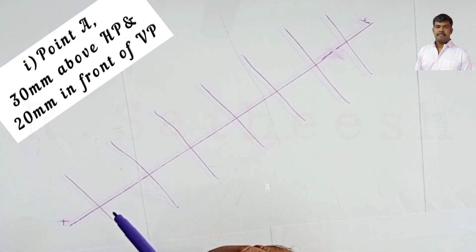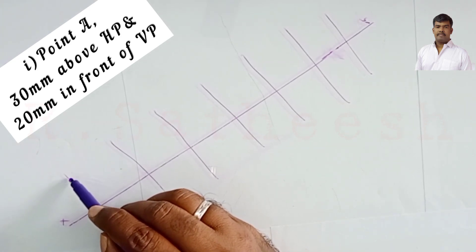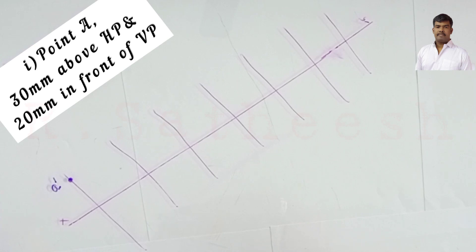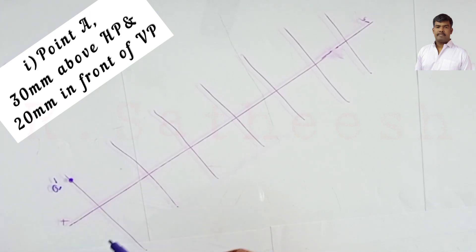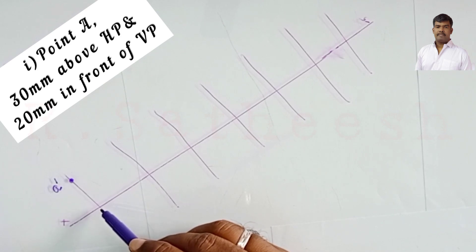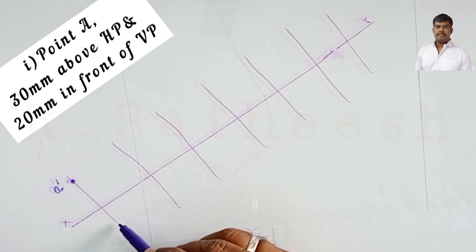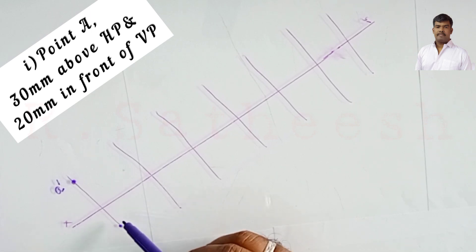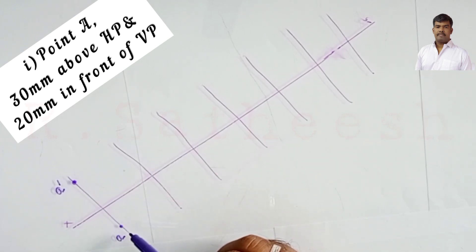Point A is 30 mm above HP and 20 mm in front of VP. This means point A lies in the first quadrant. So 30 mm above HP from XY — that is the front view, marked as A dash — and the distance from XY is 30 mm. Since it is 20 mm in front of VP, in the first quadrant the top view is projected on the horizontal plane, which when tilted 90° clockwise gives a point below XY at 20 mm. This is the top view, marked as small a.